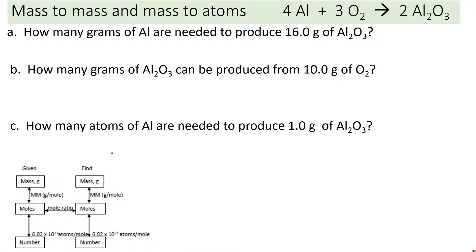Now let's look at how we do the problem if we're given grams instead of moles — this is a mass-to-mass or gram-to-gram problem. Our given is 16.0 grams of aluminum oxide, and our find is grams of aluminum. In order to use the coefficients from the reaction, we have to be in moles. So the steps are: first, convert grams to moles using molar mass; then use the mole ratio to get from moles of given to moles of find; then use the molar mass again to get back to grams.